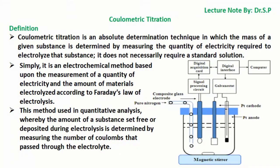Simply, it is an electrochemical method based upon the measurement of a quantity of electricity and the amount of materials electrolyzed according to Faraday's Law of Electrolysis. This method is generally used in quantitative analysis, whereby the amount of a substance set free or deposited during electrolysis is determined by measuring the number of coulombs that passed through the electrolyte.